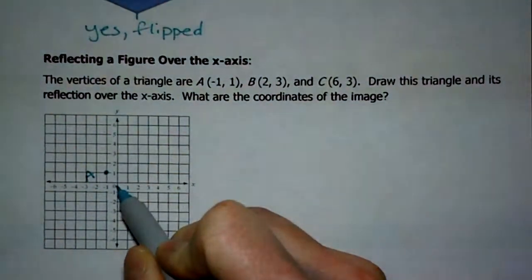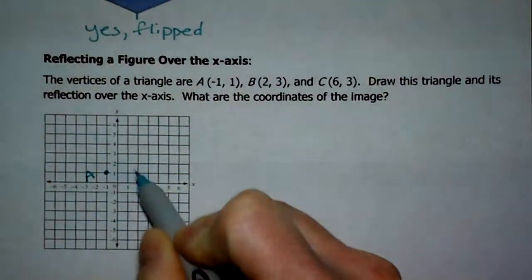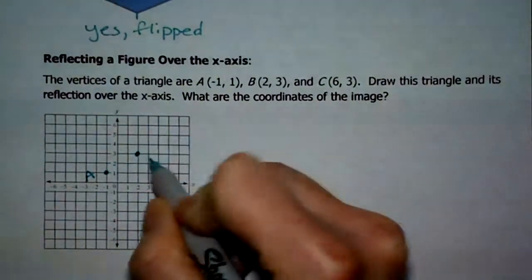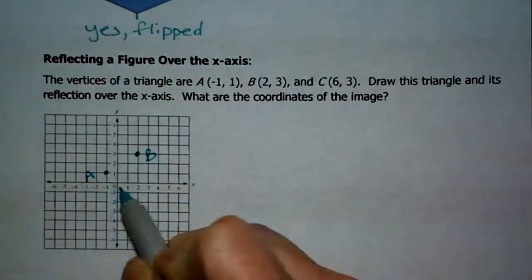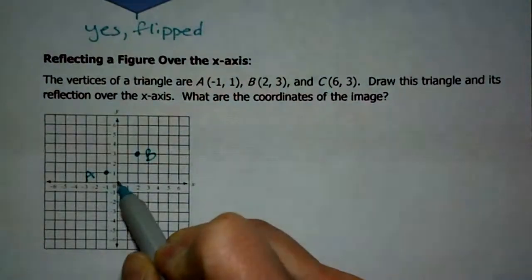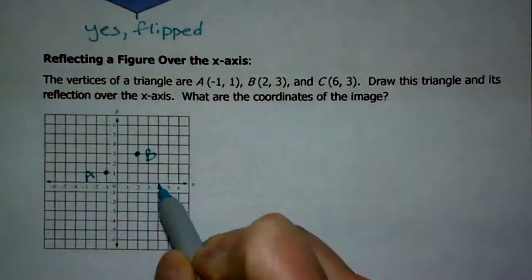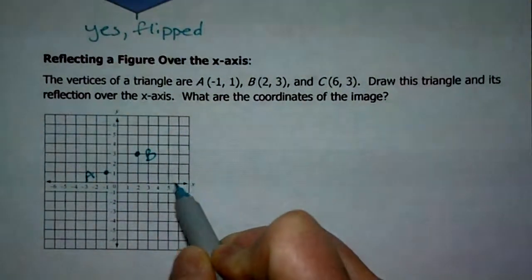B is 2, 3. So that means right 2, up 3. And C is 6, 3. So that means right 6, 1, 2, 3, 4, 5, 6, and then up 3, 1, 2, 3.